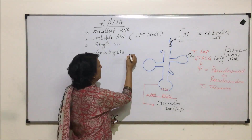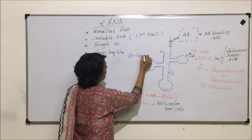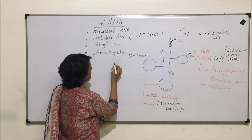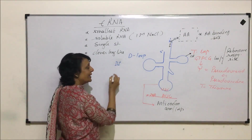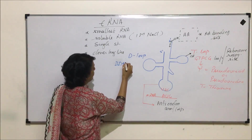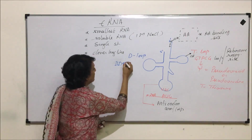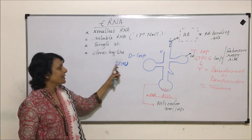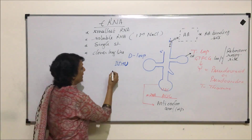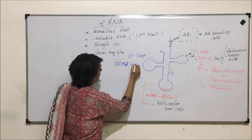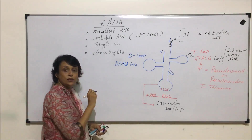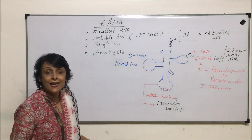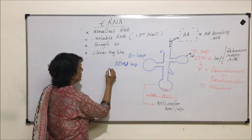The loop towards the 5' end is known as the D-loop. The reason why it is known as the D-loop is because it has dihydrouracil (DHU). Because of dihydrouracil, it is known as the D-loop or DHU-loop.